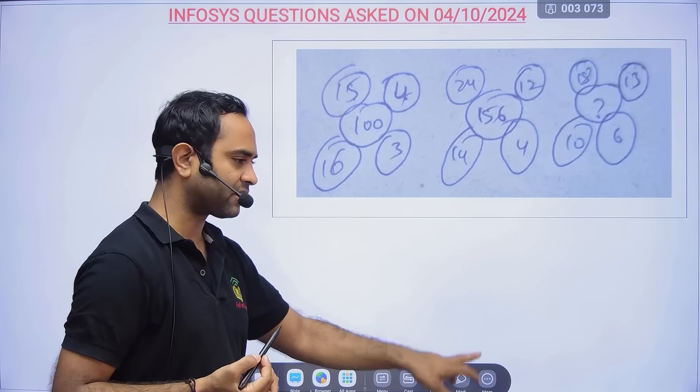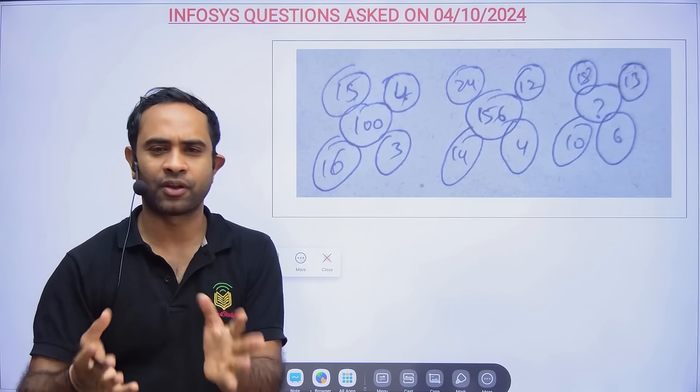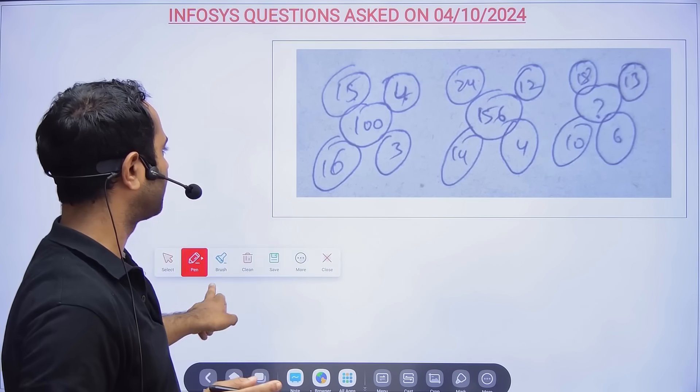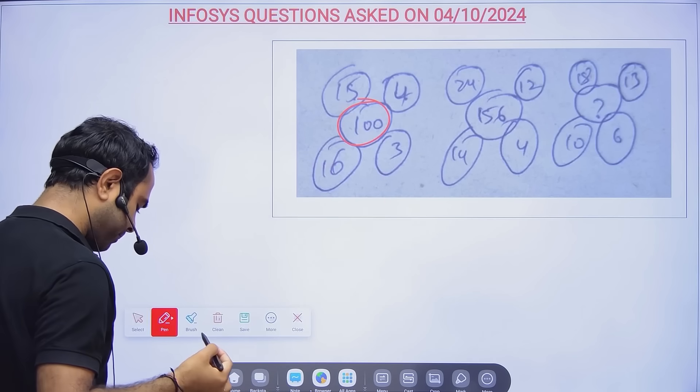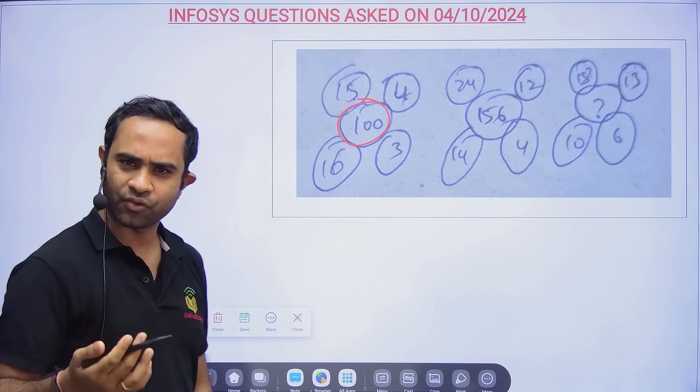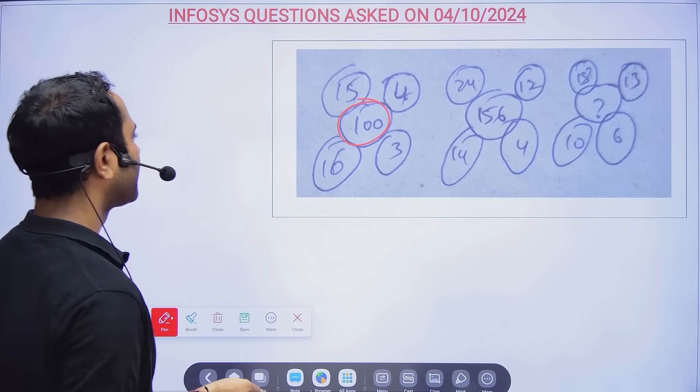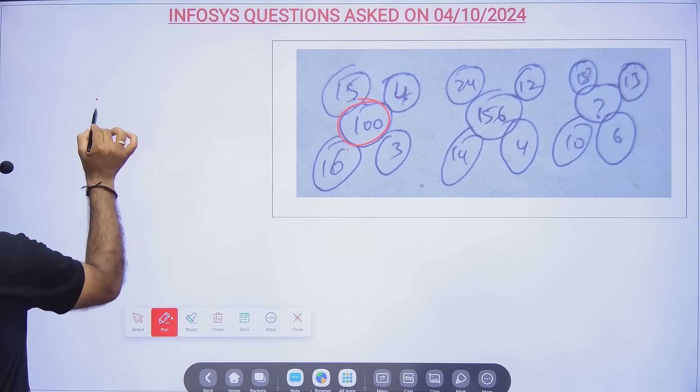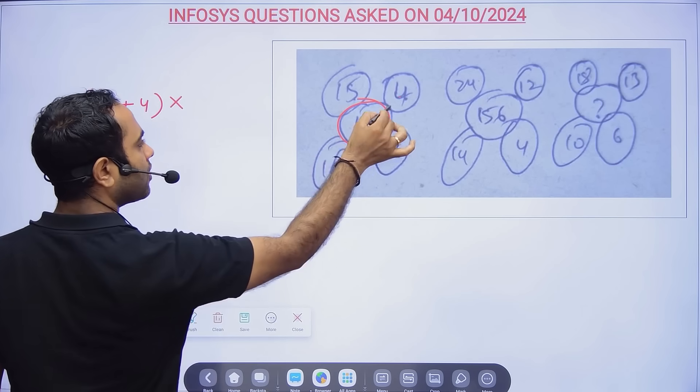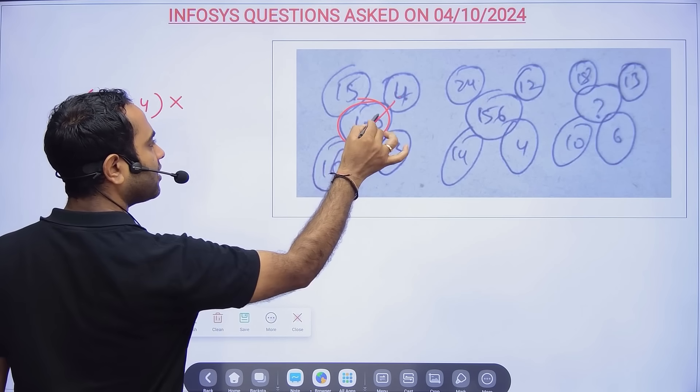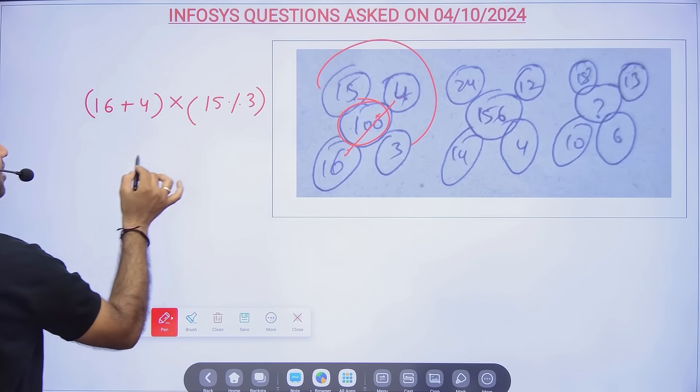This one was a little tricky, but your approach towards the puzzle will tell you the answer. Here you want 100 in between. 100 will come when you have 20 × 5 or 10 × 10, 50 × 2. So 16 + 4 = 20 × 5 = 100.